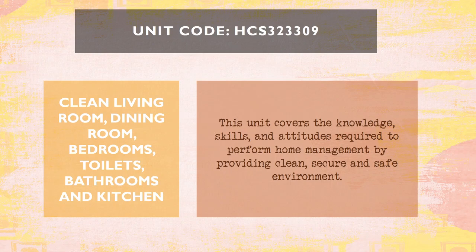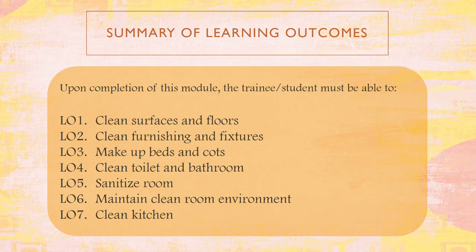Let's move on to the third core competency under Part 2: clean living room, dining room, bedrooms, toilets, bathrooms, and kitchen. Caregiving can be provided in different establishments — at home, in a home for the aged, or in a toddler area such as a nursery. This unit covers the knowledge, skills, and attitudes required to perform home management by providing a clean, secure, and safe environment. Upon completion of this module, the student must be able to clean surfaces and floors, clean furnishings and fixtures, make up beds and cots, clean toilet and bathroom, sanitize rooms, maintain room environment, and clean the kitchen.